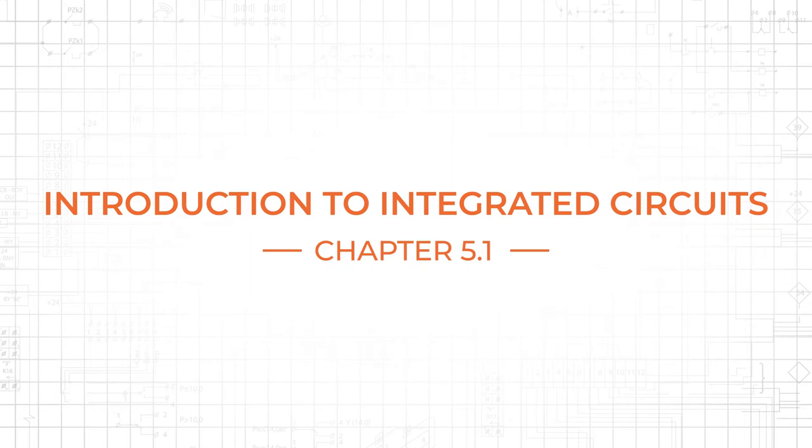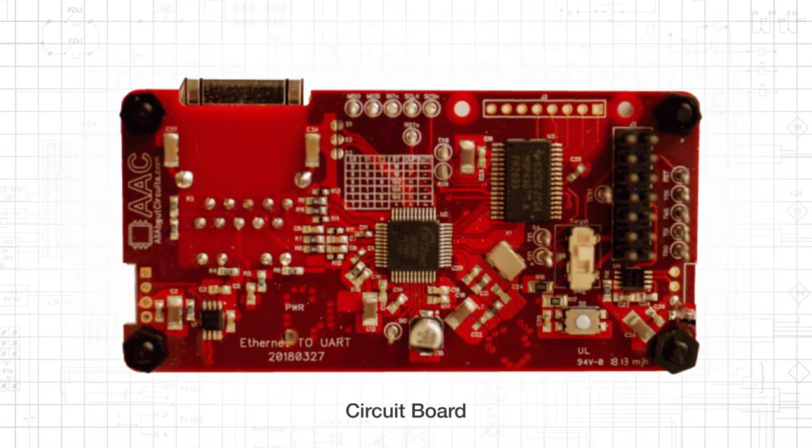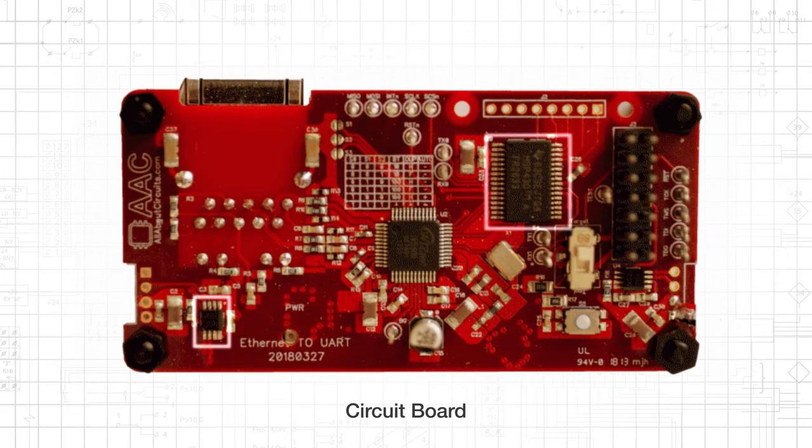If you look at a modern printed circuit board, you will almost certainly see some rectangular black packages with silver colored terminals protruding from the edges. We often refer to these packages as components or devices, and with good reason. They look like components, are purchased as components, and typically function as components.